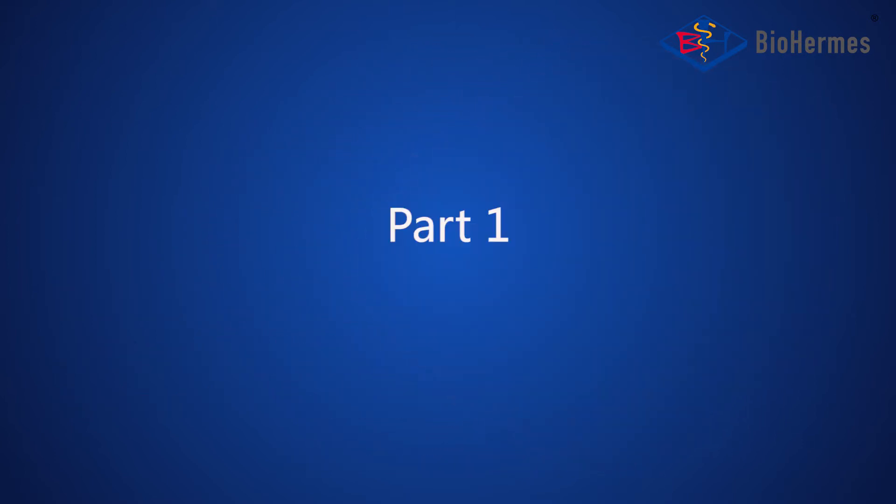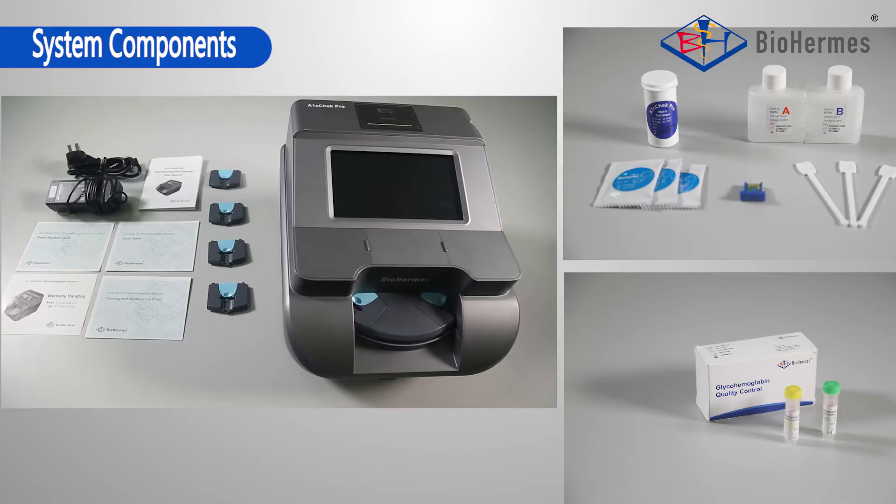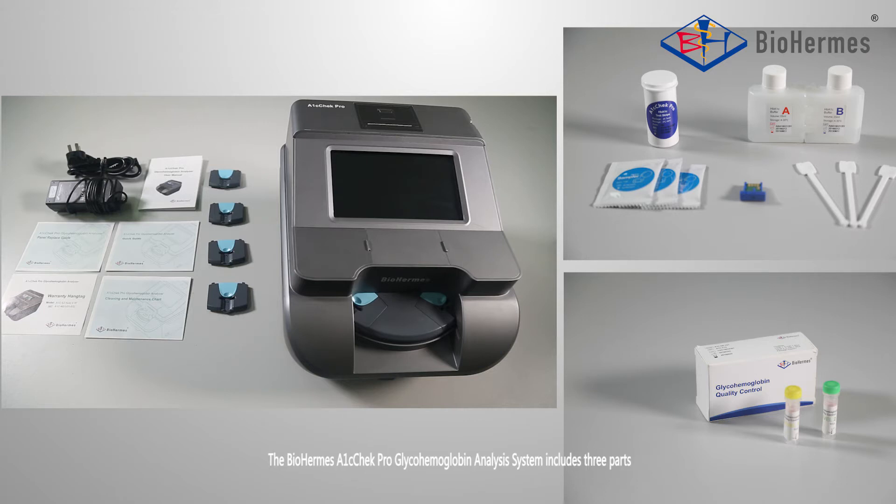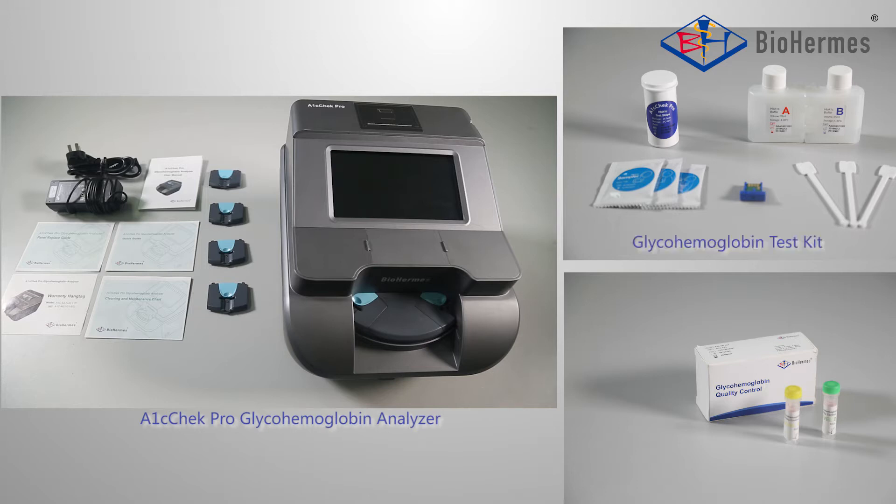Part 1: System Introduction. System Components. The Biohermese A1C Check Pro Glyco-Hemoglobin Analysis System includes three parts: A1C Check Pro Glyco-Hemoglobin Analyzer, Glyco-Hemoglobin Test Kit, and Glyco-Hemoglobin Quality Control.